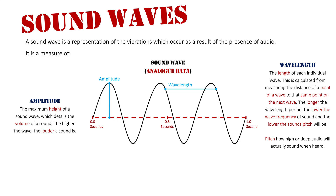The next one is wavelength. The wavelength is the length of each individual wave, and it is calculated by measuring the distance from a point on one wave to the exact same point on the next wave. That distance should be the same no matter what point you choose. The longer the wavelength, the lower the wave frequency and the lower the sound's pitch will be. Pitch is how high or deep the audio will actually sound when heard.